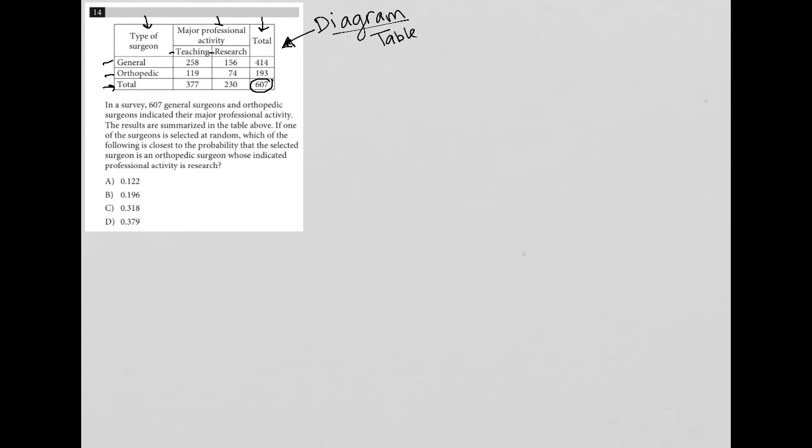If one of the surgeons is selected at random, which of the following is closest to the probability? Okay, so this is a key word. On this test, the word probability, anytime you see the word probability, you should always think to yourself, it's a fraction.